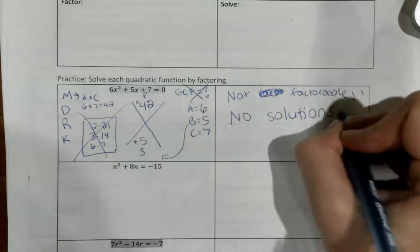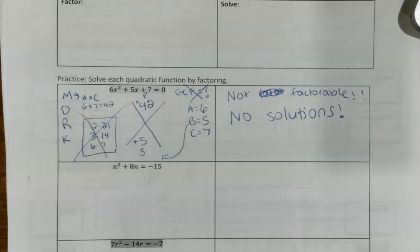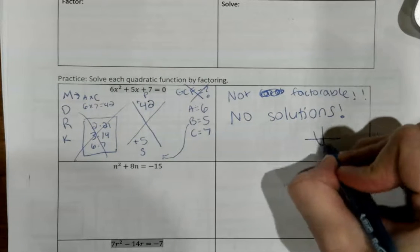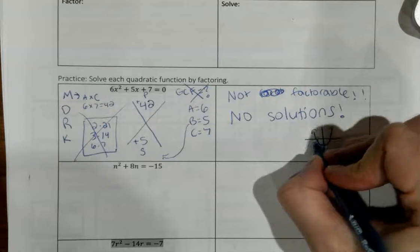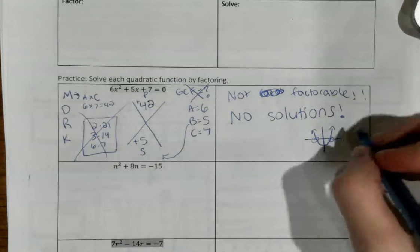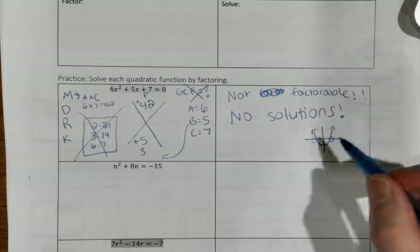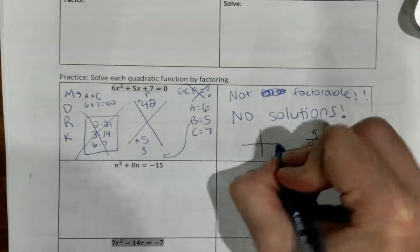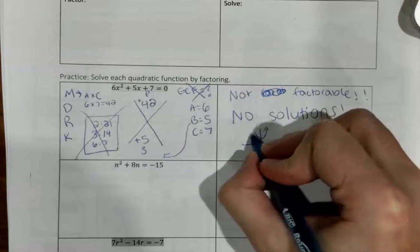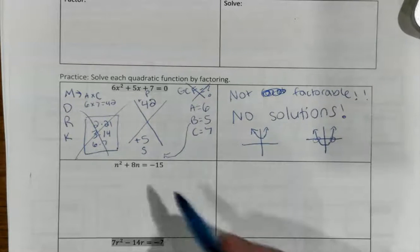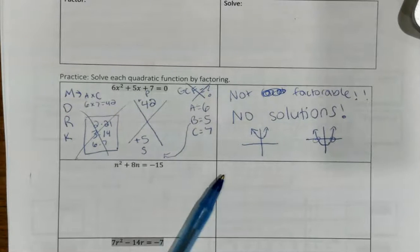Now, I want to pull this up on Desmos so we can confirm. Remember, solutions for a parabola or a quadratic are where they hit the x-axis. We said that they can either have two solutions, one solution, or no solution. And the no solution would be if the quadratic doesn't hit the x-axis at all. That must be happening here.